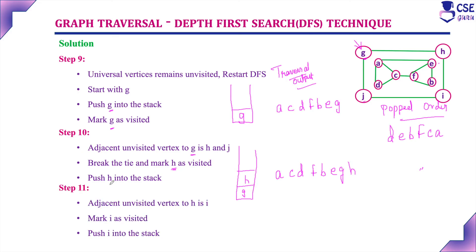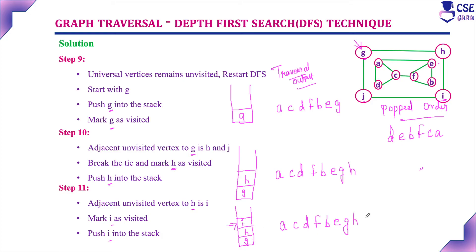Step 11: Currently visited vertex is H. Consider the adjacent unvisited vertex to H, that is I. Mark I as visited and push I into the stack. Stack now contains G, H, I on top. Traversal output is A, C, D, F, B, E, G, H, I. Popped order remains D, E, B, F, C, A.